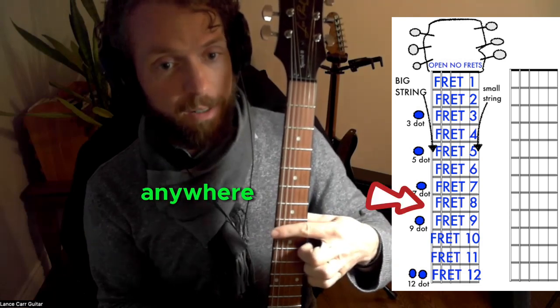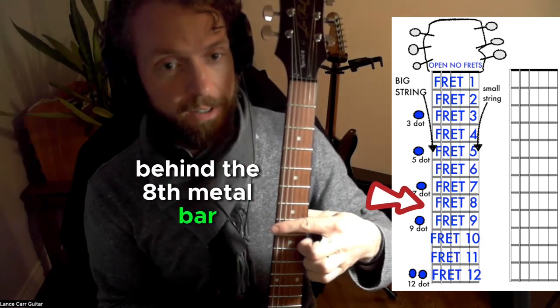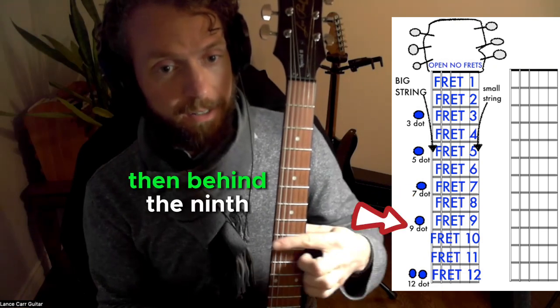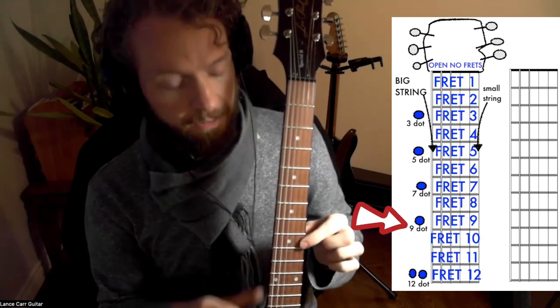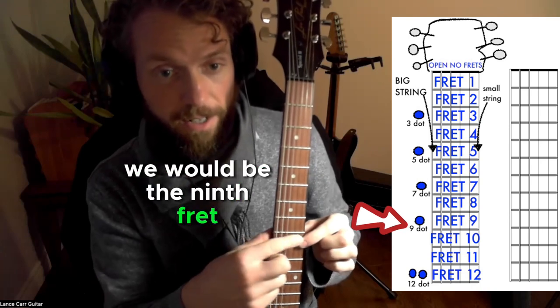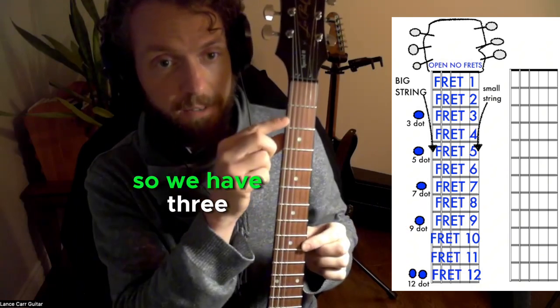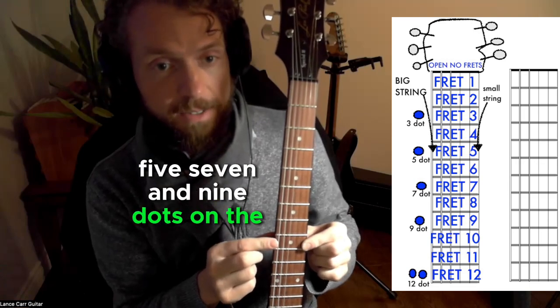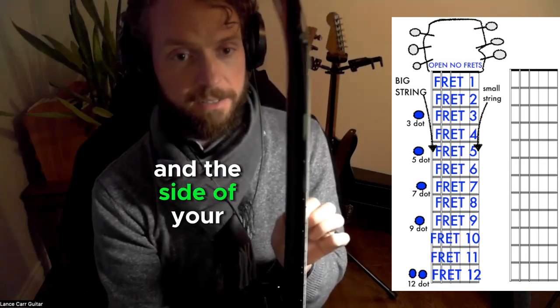And if we were to play anywhere behind the eighth metal bar on any string, that would be the eighth metal fret. Then behind the ninth, it would be the ninth fret. Now that also has a dot, so we have three, five, seven, and nine dots on the face and the side of your fretboard.